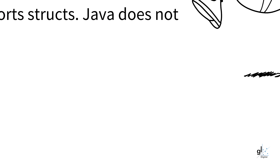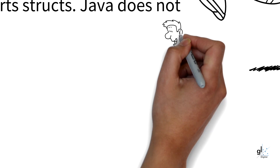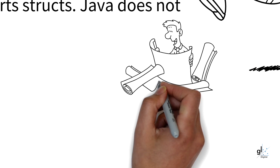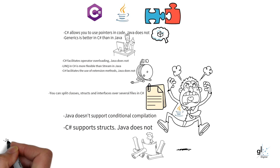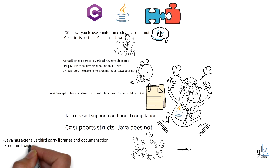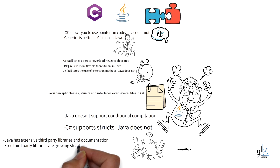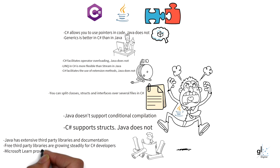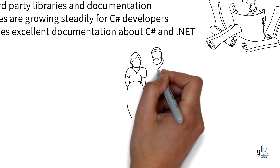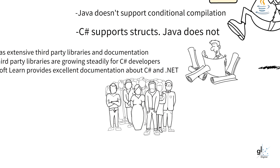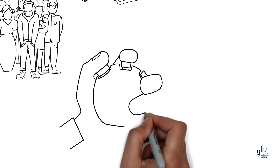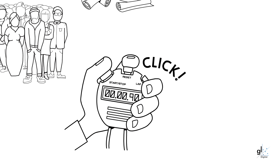Java has a huge array of third-party libraries and extensive documentation. C-Sharp also has a lot of third-party packages and libraries that are growing day by day. Microsoft Learn is an excellent platform that C-Sharp developers can use free of charge to better their comprehension of C-Sharp and .NET. At present there are millions more Java developers than C-Sharp developers in the world, but reputable sources claim that gap is rapidly closing. C-Sharp is generally much faster than Java.